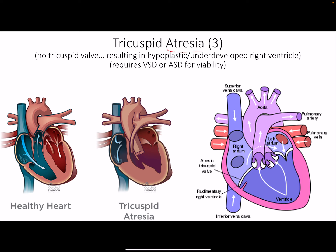Tricuspid atresia: 'atresia' means something's gone away — here, the tricuspid valve doesn't exist. Blood would just be trapped in the right atrium with no full circuit. This is also not compatible with life unless there's a VSD or ASD allowing blood to cross to the left side and reach the lungs. Because blood isn't flowing into the right ventricle, we end up with a hypoplastic — underdeveloped — right ventricle as a consequence of the lack of connection between the right atrium and right ventricle.